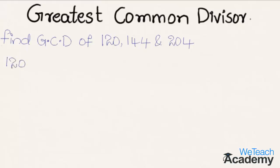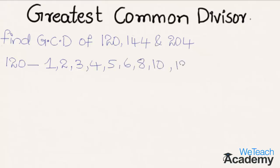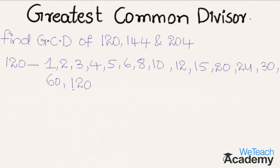Let us find the factors for 120. So 120 is divisible by 1, 2, 3, 4, 5, 6, 8, 10, 12, 15, 20, 24, 30, 60, and 120 itself. So these are all the factors of 120.